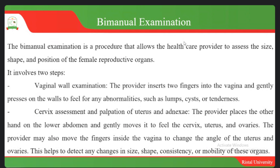The provider may move the fingers inside the vagina to change the angle and assess the uterus and ovaries. By observing the patient's facial expression, you can detect tenderness. This helps detect changes in the size of the ovaries, vagina, and cervix, and identify any abnormal growth or mass. You can assess the shape, consistency, and mobility of these organs through bimanual palpation.